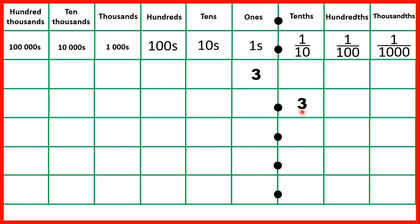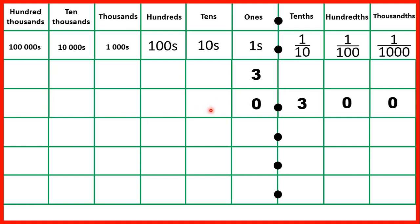Now what if we just have three tenths? All of our other place value columns are really zeros. But we don't need zeros in our whole number place values if we only have three tenths. The exception is our ones column — we always need to write a digit in the ones place value, so here we do need to write the zero. But we don't need zeros on the end of decimals, because just writing 0.3 tells us that we only have three tenths.